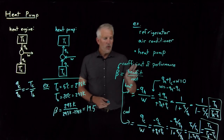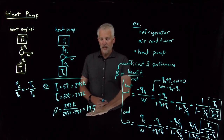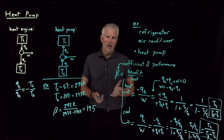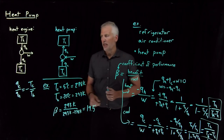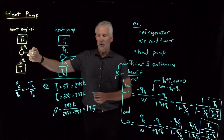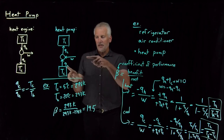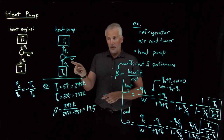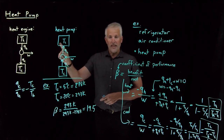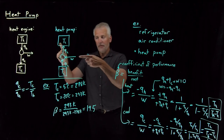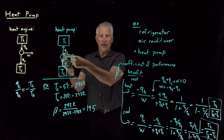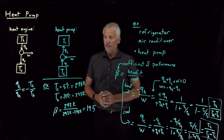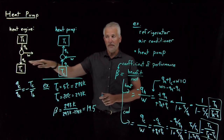This explains why we don't call it efficiency — this coefficient of performance is very often larger than one for a heat pump. It means that for every one joule of electricity we pay, we can dump 19.5 joules of heat into the house, having extracted 18.5 joules from the outside. The coefficient of performance is commonly greater than one because heat engines are inefficient, and the consequence is that heat pumps tend to be quite efficient.